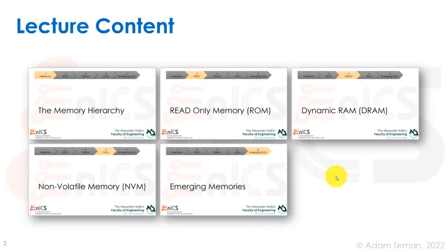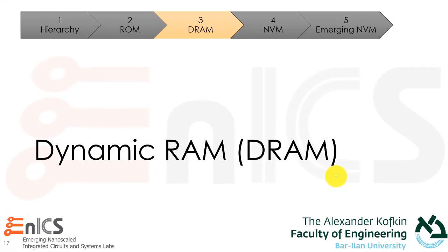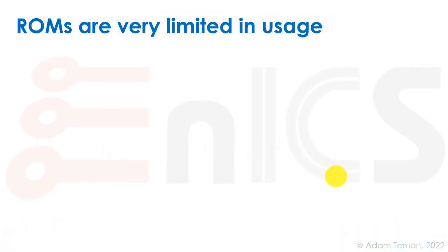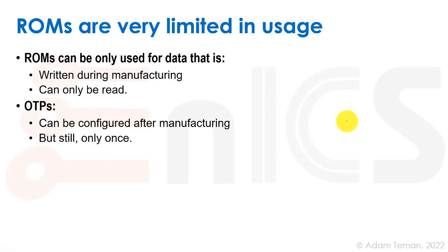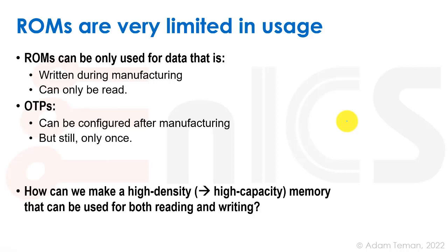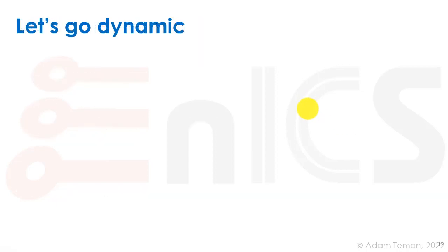After discussing read-only memories, we're going to move on to the interesting case of dynamic RAM. ROMs are very limited — they can only be used for data written during manufacturing and can only be read. One-time programmable memories can be configured after manufacturing, but they can only be programmed once. How can we make a high-density, high-capacity memory that can be used for both reading and writing? The answer is to go dynamic.